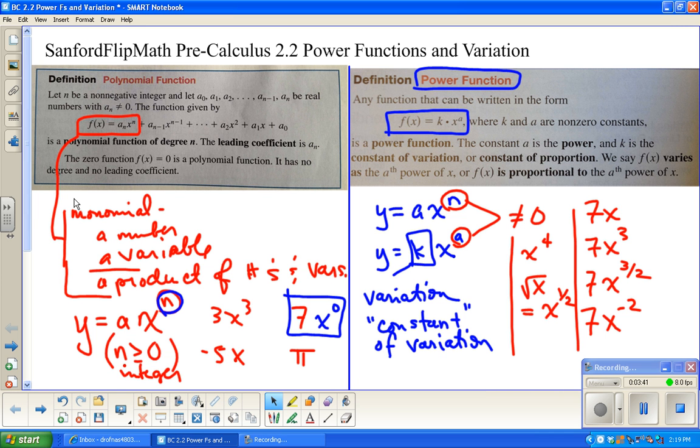Also that number up front, that k, could be one, so you could be looking at something like x to the fourth as a power function. The square root of x technically is a power function because it can be written as x to the one-half. So power functions are a little bit different. Any variable raised to any exponent, not zero. And similarly, the number up front needs to not be zero also.